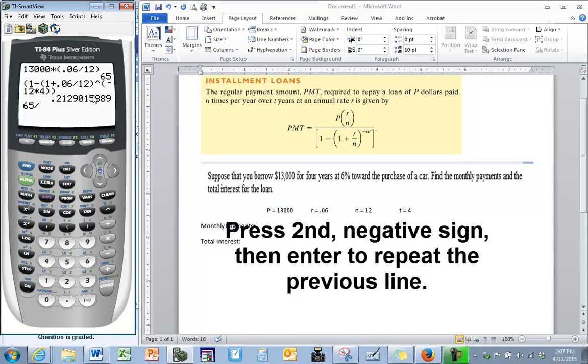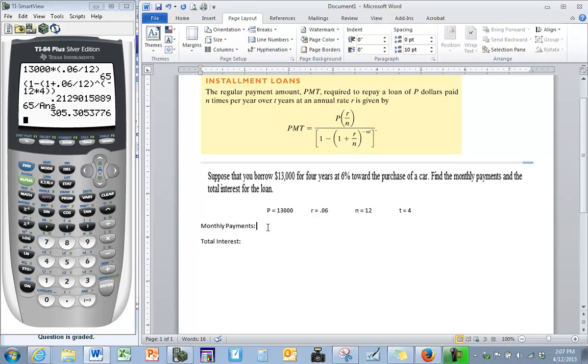So we want to take the numerator, 65, divided by that previous line. And to make an easy step for us, we're going to press 2nd and enter in order to get answer. So that way you don't have to type in .2129 all over again. So here's our final answer. Our monthly payment, we will pay $305.31.